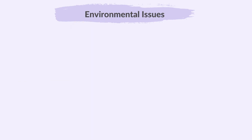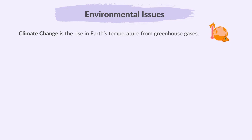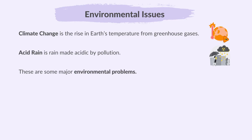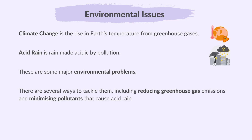Let's turn our attention to environmental issues. Climate change is the rise in Earth's temperature from greenhouse gases. Acid rain is rain made acidic by pollution. These are some major environmental problems. There are several ways to tackle them, including reducing greenhouse gas emissions and minimizing pollutants that cause acid rain.